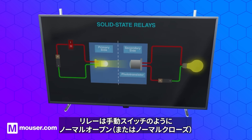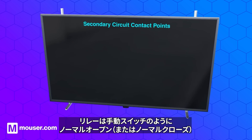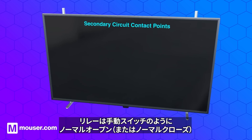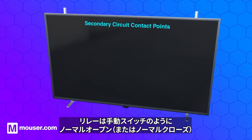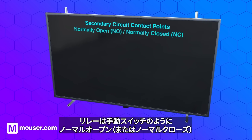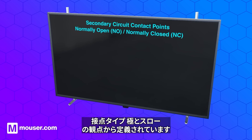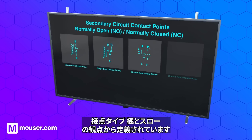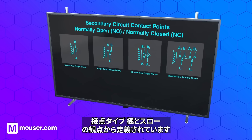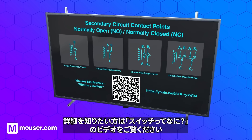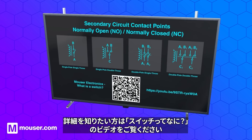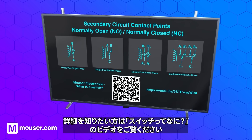Similar to manual switches, the secondary circuit contacts are defined in terms of normally open or normally closed contact types, and poles and throws. View the 'What is a Switch' video to learn more about contact types.